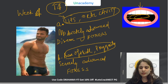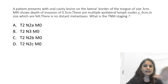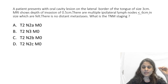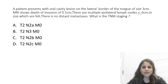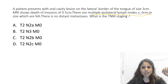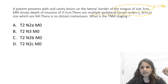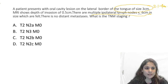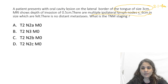Now let us move on to the lymph node involvement classification. With the same patient — oral cavity lesion on the lateral border of tongue, size 3 cm, depth of invasion 0.5 cm — there are now multiple ipsilateral lymph nodes less than or equal to 6 cm which are felt, and no distant metastasis so M is 0. We can see the size is between 2.1 to 4 cm, so T2. But we have to decide the lymph node involvement — the confusing options are N2A, N2B, N2C, or N3.